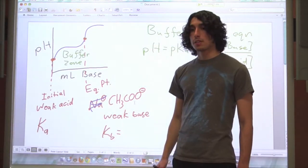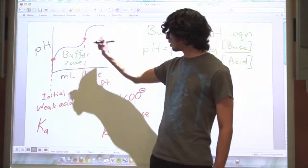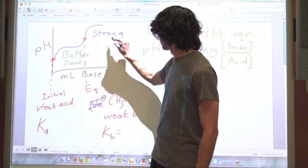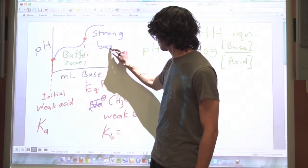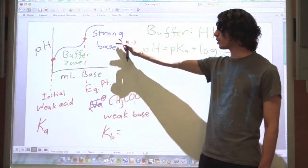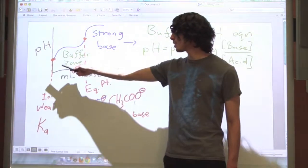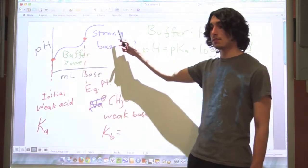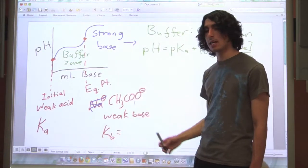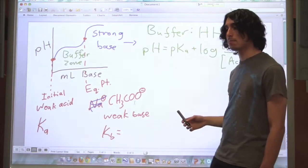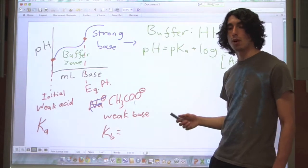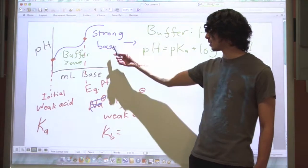The final part of this is beyond the equivalence point. And this part is pretty simple because essentially you just have a strong base. Once the base has neutralized all the acid, there is effectively only strong base in solution. There's also a little bit of acetate ions in solution, but that's going to minimally change the pH compared to the strong base that you're adding.